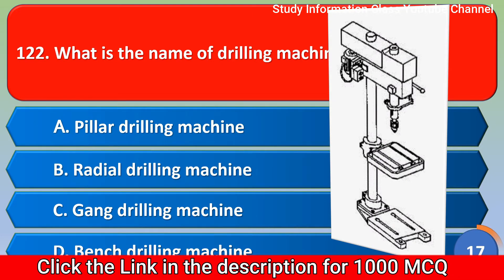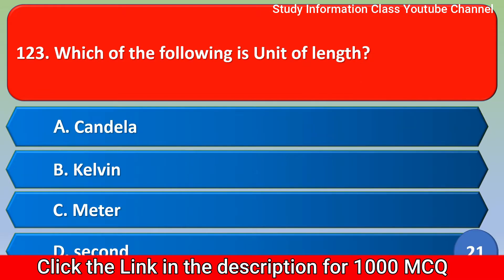Next question: What is the name of the drilling machine? Option A: pillar drilling machine, Option B: radial drilling machine, Option C: gang drilling machine, Option D: bench drilling machine. The correct answer is Option A — pillar drilling machine.